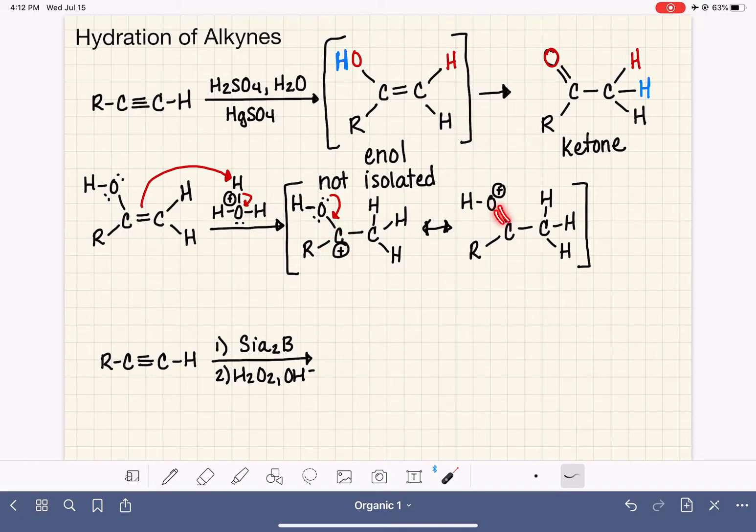So the water molecule that was left over after this reaction took place is going to come along and grab that extra hydrogen off of the oxygen. So that gets rid of the positive formal charge. And we end up with the ketone product. So that's how the reaction takes place.